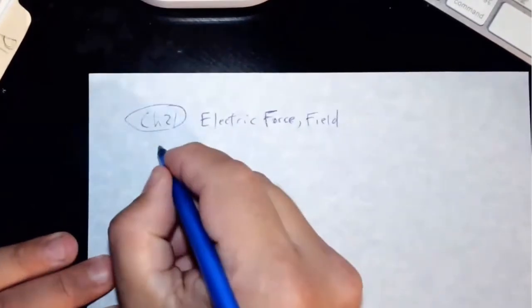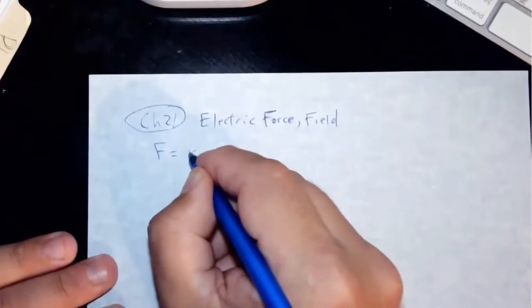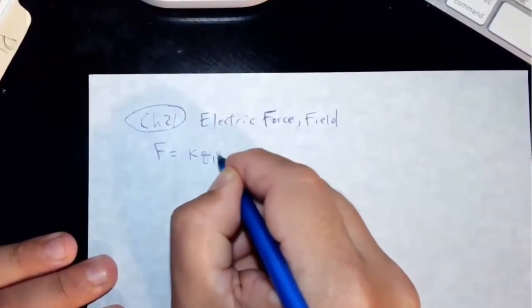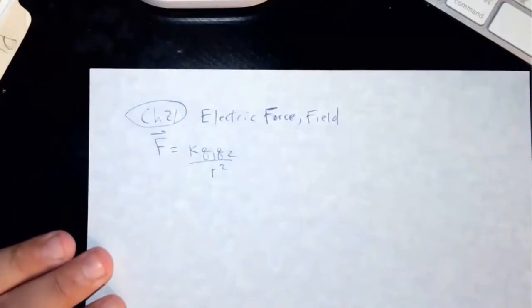So we have Coulomb's law: F equals k Q1 Q2 over R squared. This is the force between two charges.